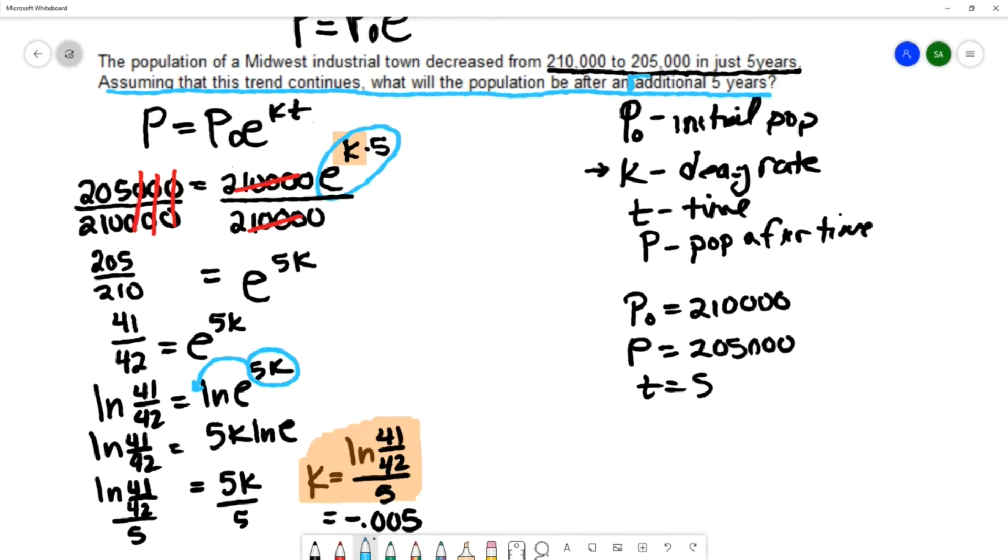There are two ways we can approach this calculation. One of them is if we use P₀ to be 210,000. If we use 210,000, then our time will be the original five years plus the additional five years, which would be a total of 10 years.